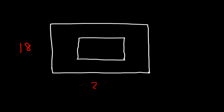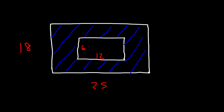Now let's look at a rectangle inside another rectangle. The large rectangle has a width of 18 and a length of 25. The small rectangle inside is 6 by 12. We need to find the area of the shaded region, which is the large rectangle minus the small rectangle. The dimensions of the large rectangle are 18 by 25.